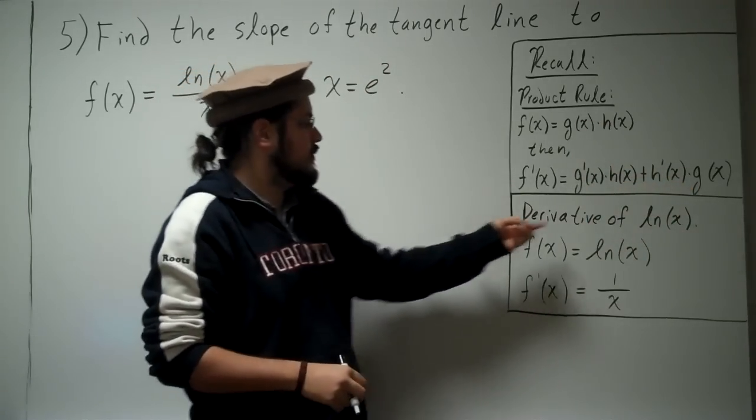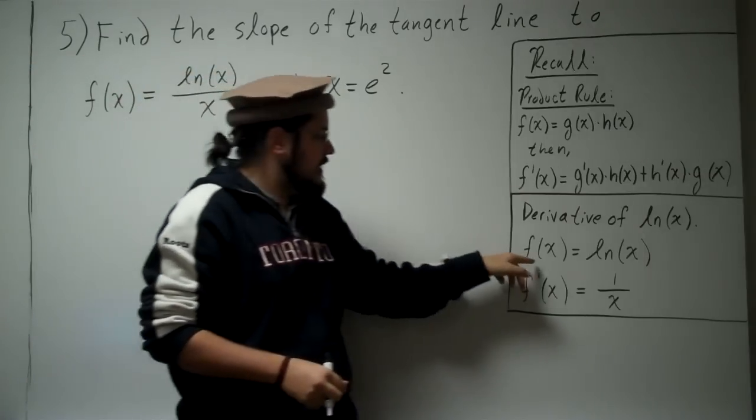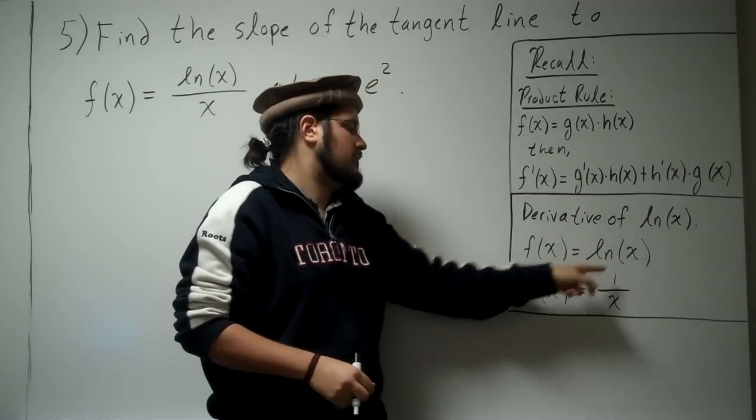Okay, another important thing is the derivative of ln(x). We're definitely going to take the derivative of ln(x) here. So we have f(x) = ln(x). The derivative is just 1 over x.